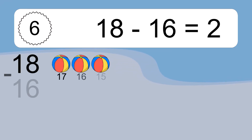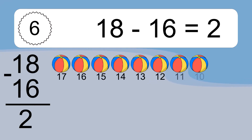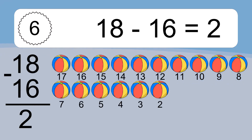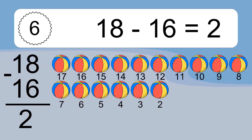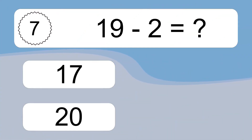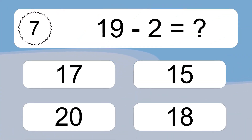18 minus 16 equals 2. Let's count it. 17, 16, 15, 14, 13, 12, 11, 10, 9, 8, 7, 6, 5, 4, 3, 2. 19 minus 2 equals what?